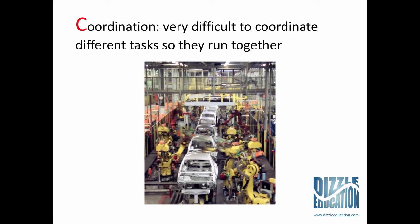Coordination is our third example of dis-economies of scale. With a very big, very complex task like the manufacturing of cars — as you can see in this picture — it only needs one small thing to go wrong in your production process to slow everything down. For example, if this factory ran out of wing mirrors, the whole production process would have to stop until a new supply arrived, because they can't take cars away without wing mirrors. So it's really important to be coordinated in a larger firm, but there are more things that can go wrong, making dis-economies of scale more likely.